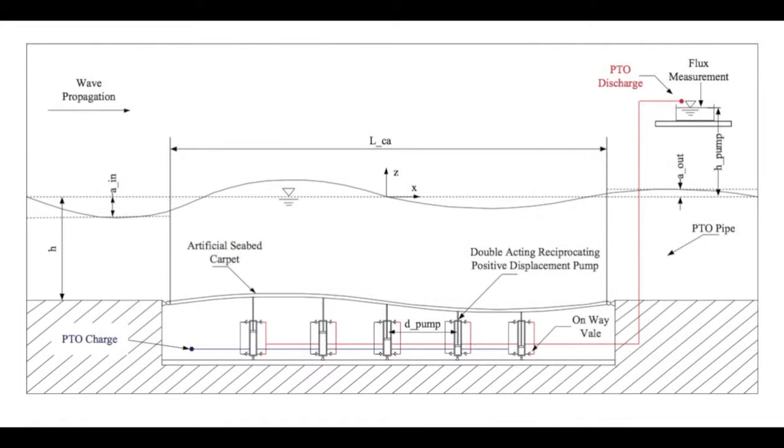The carpet is composed of linear springs that provide the restoring force and generators that extract energy. The shafts of the pumps are connected with the carpet and are displaced equally. Through the displacement of the piston, water is pumped from the power take charge to the power take discharge.